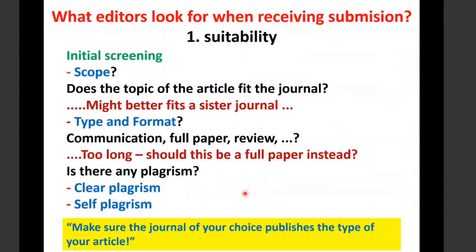What will the editor be looking for in any particular submitted paper? Number one, the main issue is suitability. There is a common misconception here — most of the time you think the journal sounds like it's in your field, or you use a website that selects a journal for you based on keywords and abstract. There is a risk there, because the first thing you have to understand is the scope. The journal will do an initial screening: does the topic of the article fit the journal, or might it be more suitable for a sister journal?